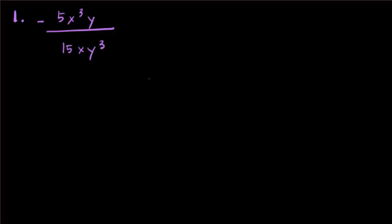How to simplify. So we have a negative and we're just gonna keep that negative. We have a five and 15. That's one and three, reduces down to one and three.